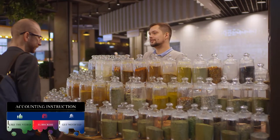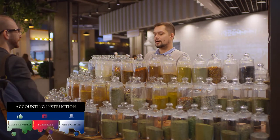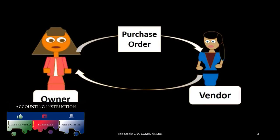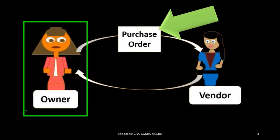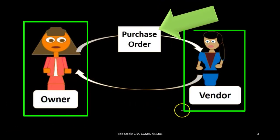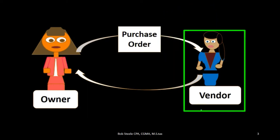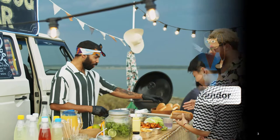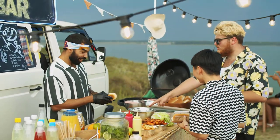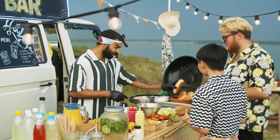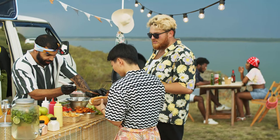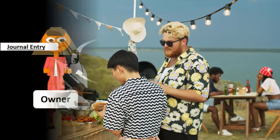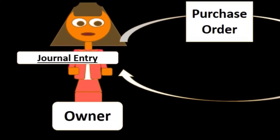Let's take a look at an example. We're going to be the owner on the left hand side, and we want to purchase inventory from a vendor on the right hand side. To do that, the business owner will first create a purchase order that will then be given to the vendor, listing out what is needed.